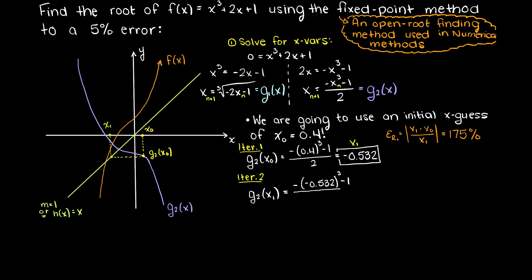So let's plug our x1 value into our g2 equation again, and we get minus 0.424, which when solving for our percentage error, we get 25.47%, which as expected is lower than our previous iteration's error, which suggests that we are now converging, as expected.